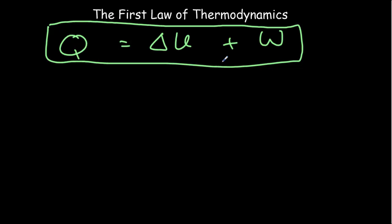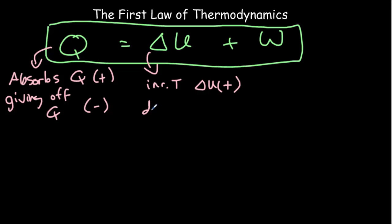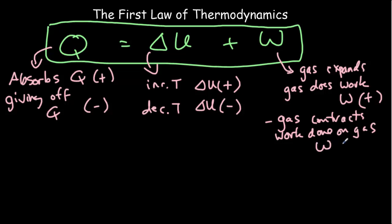All of these terms can be positive or negative, so be careful. If your gas is absorbing energy, Q is positive; if your gas is giving off heat, Q is negative. For ΔU, an increase in temperature means internal energy increases; a decrease in temperature means ΔU is negative. Be especially careful with work: if the gas expands — doing work on the environment — work is positive. If the gas contracts, meaning the environment does work on the gas, then work is negative.